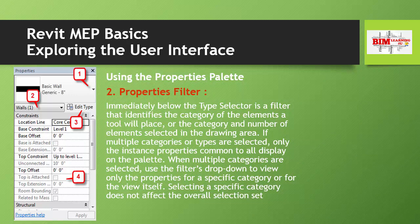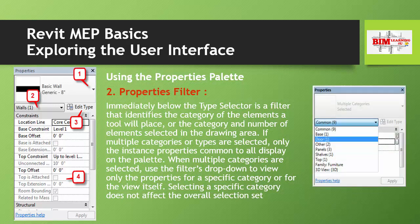Point two — Properties Filter: immediately below the Type Selector is a filter that identifies the category of an element a tool will place, or the category and number of elements selected in the drawing area. If multiple categories or types are selected, only the instance properties common to all are displayed. When multiple categories are selected, use the filter drop-down to view only the properties for a specific category or for the view itself.